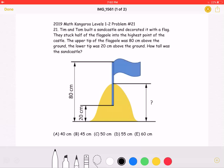Tim and Tom built a sandcastle and decorated it with a flag. They stuck half of the flagpole into the highest point of the castle. The upper tip of the flagpole was 80 cm above the ground. The lower tip was 20 cm above the ground.